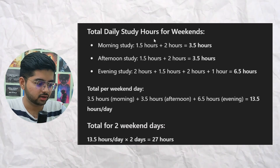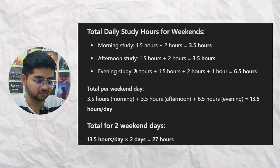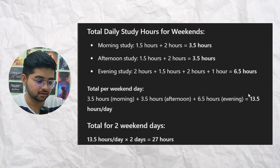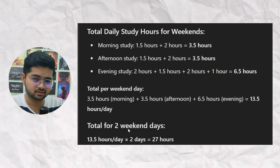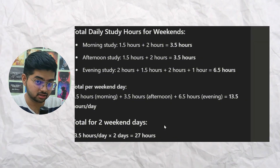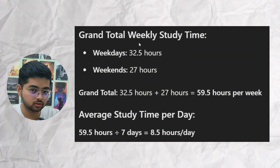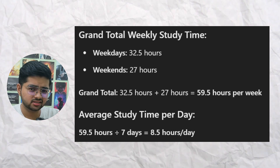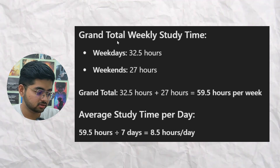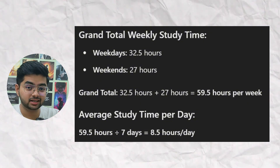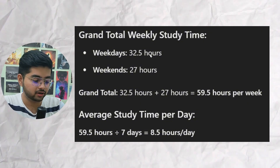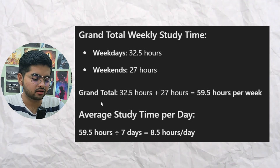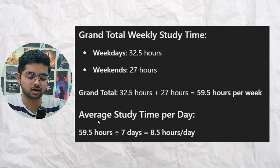Total daily study hours on weekends: morning 3.5 hours, afternoon 3.5 hours, evening 6.5 hours — a total of 13.5 hours per day. Multiplied by two days, that is 27 hours. Grand total: weekdays 32.5 hours plus weekends 27 hours equals 59.5 hours. Divided by seven, you will be studying around 8.5 hours per day, and assuming you miss half an hour, you'll easily be studying eight hours per day.